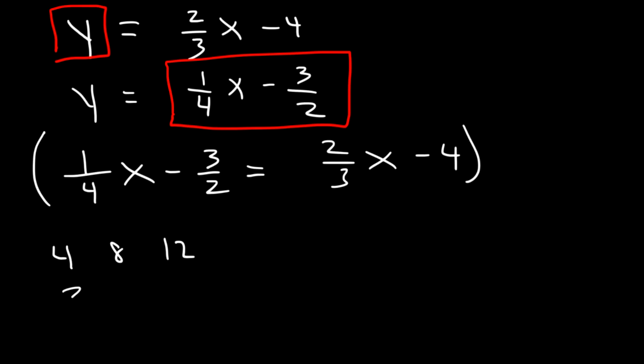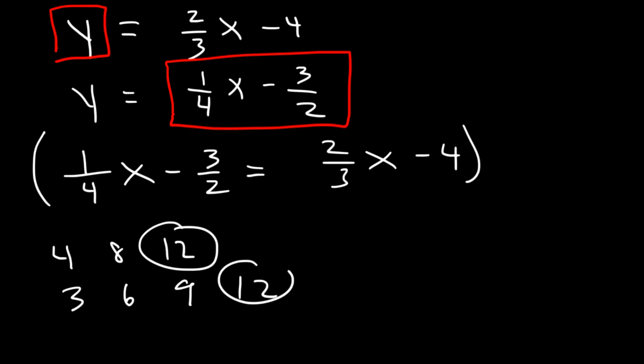Multiples of 3 are 3, 6, 9, and 12. So 12 is the common multiple between 2, 3, and 4. You can divide 12 by 4, by 2, by 3, and get a whole number.